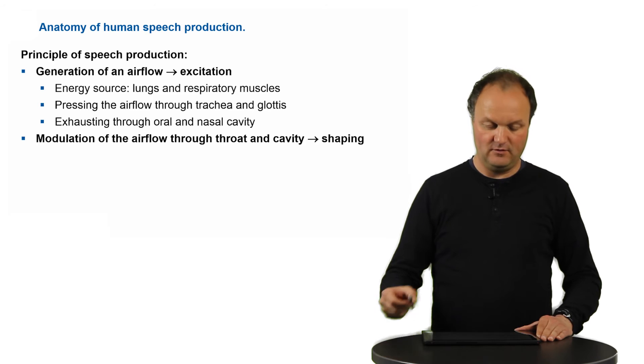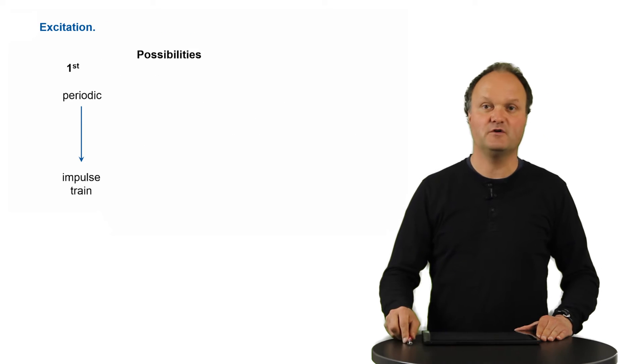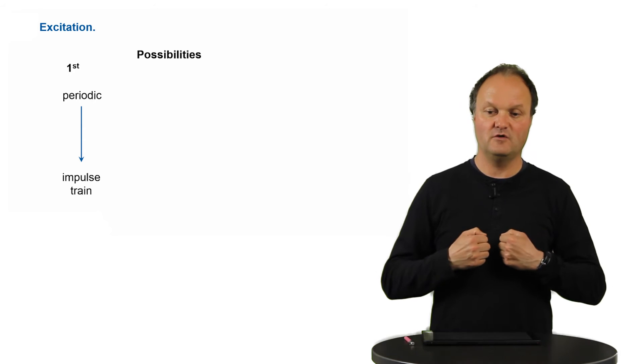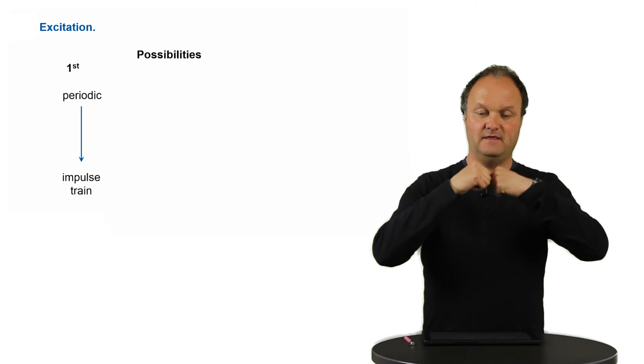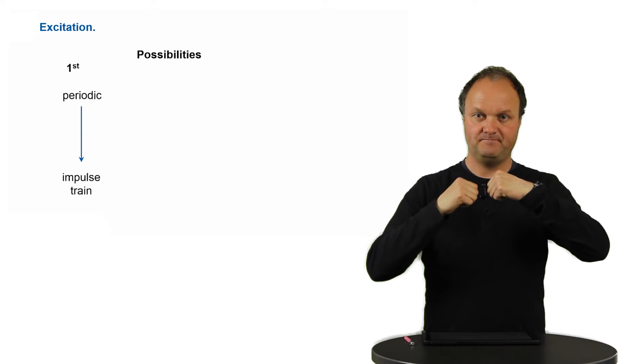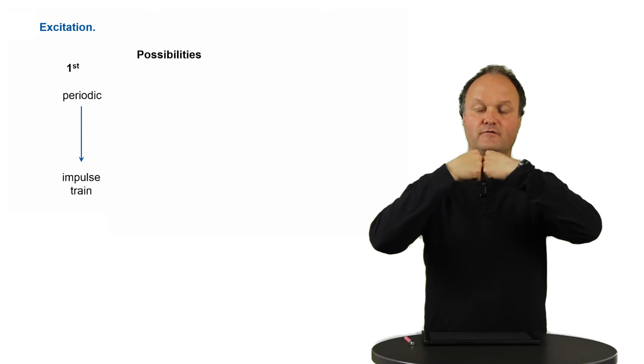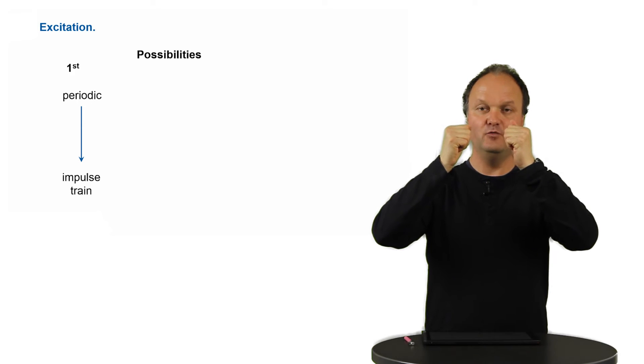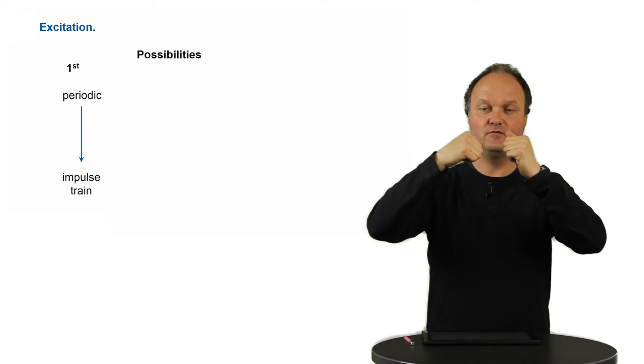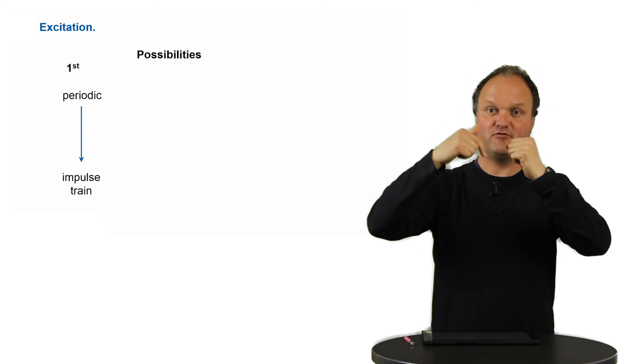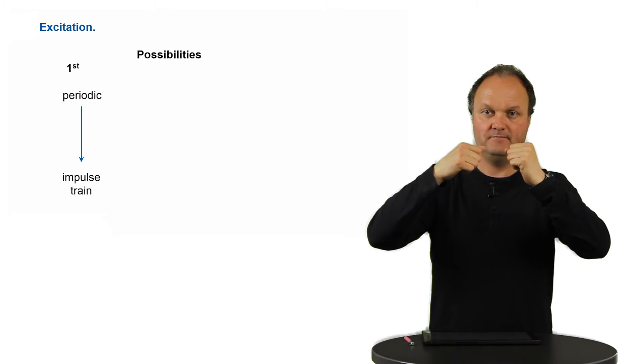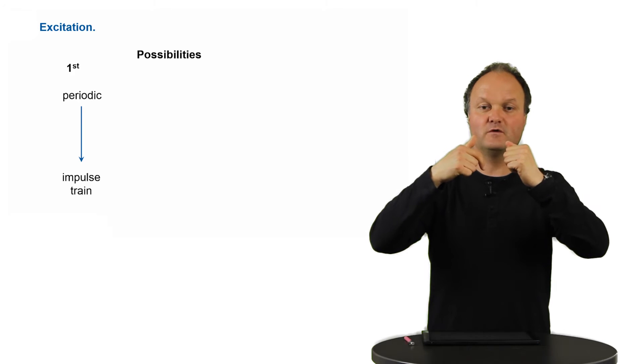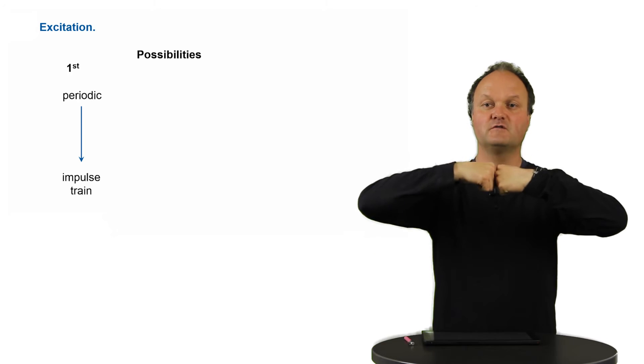Now we will first talk about the excitation signal and there are actually different possibilities for generating such a signal. The first is if the vocal folds are closed, then if you press through your musculation onto the lungs, the air pressure below the vocal folds will rise up to certain points where the vocal folds suddenly get open and then the air can evaporate through the vocal folds. And of course the air pressure below the vocal folds will drop again and this drop in the air pressure will lead to a feedback force which is called the Bernoulli force which forces the vocal folds to close again.